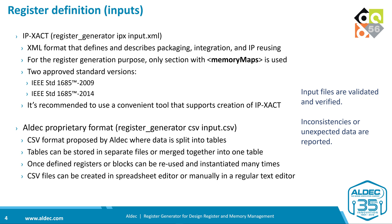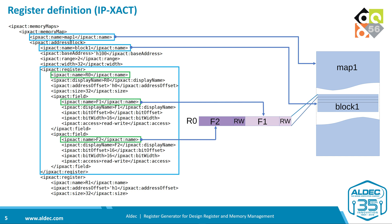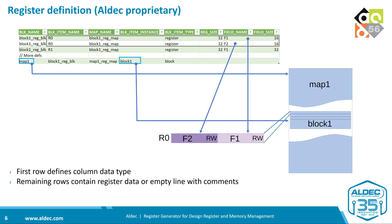Any inconsistencies or unexpected data are reported to the console. In the sample IP-XACT file, we have map 1 with block 1, and inside this block there is register R0 with two fields, F1 and F2. Both fields have the same size of 16 bits and access is set to read and write. The same can be done with the ALDEK format, where the first row defines column data types and remaining rows contain register data. In this case we also have map 1 with block 1 and register R0 with two fields of the same size, and because the field access type is not set, both fields default to read and write.